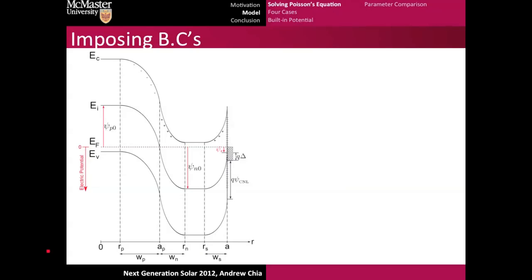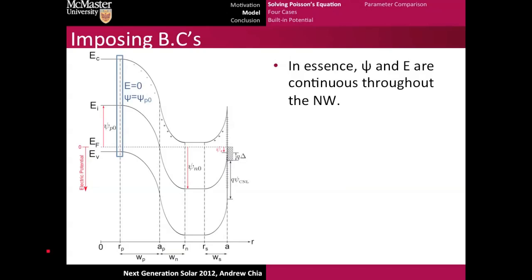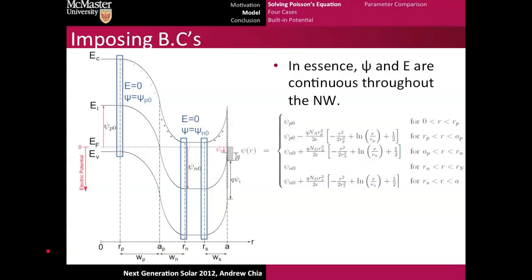At this point, all we need to do is impose some boundary conditions, and then we can get the full expression for psi. In essence, all the boundary conditions say are that psi, which is the potential, and the electric field has to be constant throughout the nanowire. We'll apply that condition at the boundary inside the P-doped core, at the boundaries inside the N-doped shell, and we'd get a big function that looks like this.